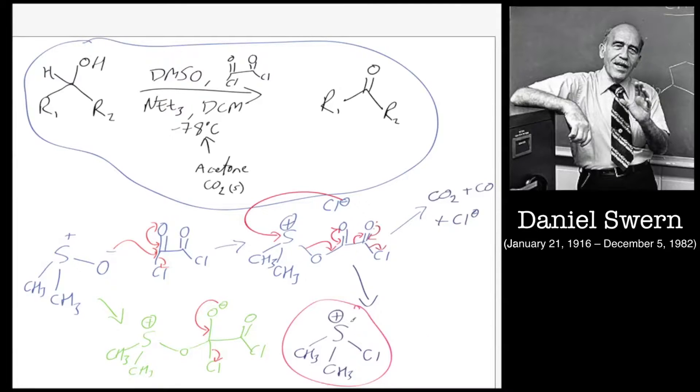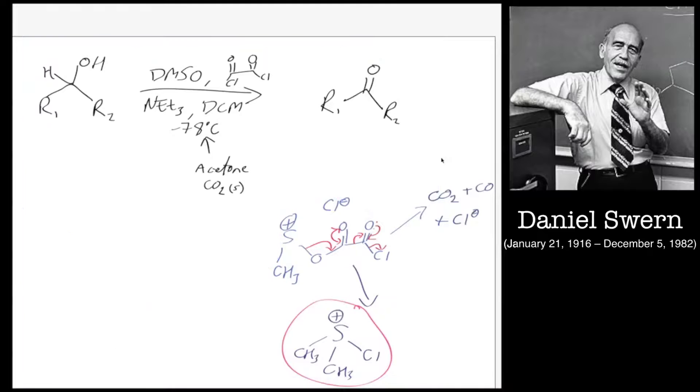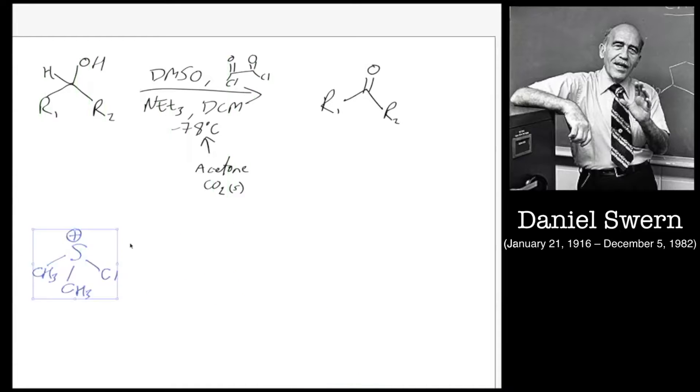That chloride is the counter ion to this species here. This species here is a chlorodimethyloxosulfonium ion, which is going to oxidize our alcohol. Let's just tidy this worksheet up, you can always rewind the video if you want to see how I did all this. What I've done is brought us back to the basics. This is the bit that's important in the mechanism now.